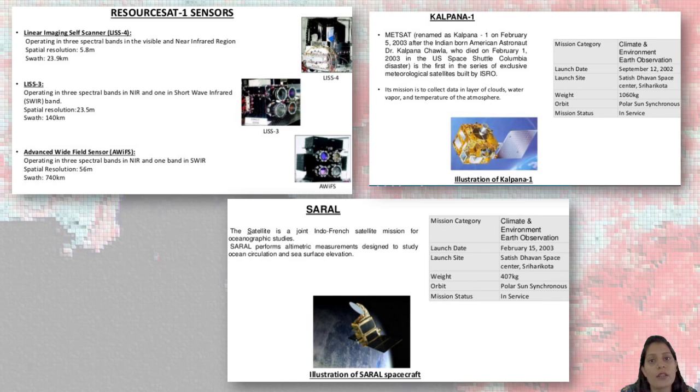We need to work more if we want that type of data again. This is how resource at work, Kalpana 1 and Saral are working. And this is the sensor. Understand the name of the platform and name of the sensor. Platform means on which I am keeping my sensor. Where my camera will stand. Remember with the clarity of all your definitions which we have discussed in the previous session.